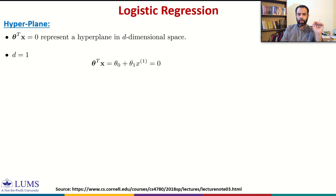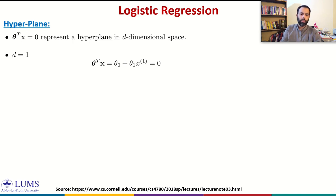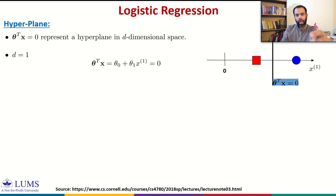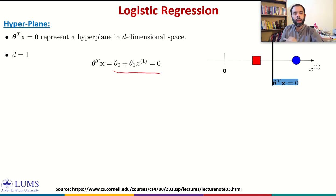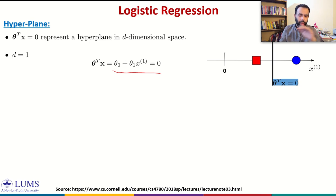When d is equal to 1, we only have a bias term theta naught and theta 1, so we have one feature. The equation theta naught plus theta 1 X equals 0 represents a point on the real line — specifically X equals minus theta naught over theta 1 — dividing the real line into two half spaces.